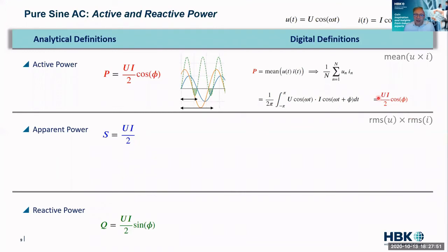But when we do that, we work it out, hey, presto, we end up that our power comes out of UI over two cos phi, which is the same as our analytical definition.